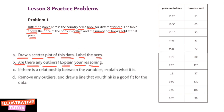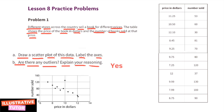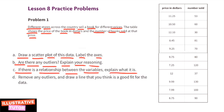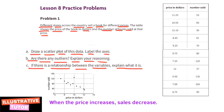Part b: are there any outliers? Explain your reasoning. Yes, there is an outlier — it's the point located far away from the line. Part c: if there is a relationship between the variables, explain what it is. When the price increases, sales decrease.